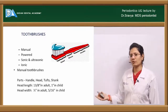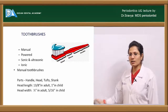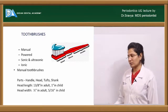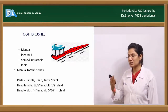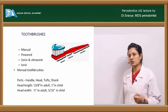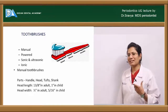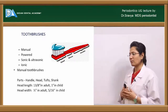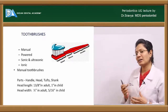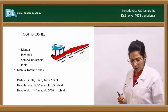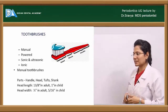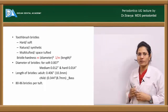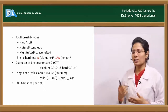For manual toothbrushes, you have three parts: the head, the shank, and the handle. In the head itself, you have certain tufts and bristles arranged in rows, with each tuft having a certain number of bristles. The head length in an adult is about 13/8 inches and about 1 inch in a child, whereas the head width in an adult is about half an inch and 5/16 inches in a child. Toothbrush bristles can be classified as hard or soft, natural or synthetic, multi-tufted or space-tufted.